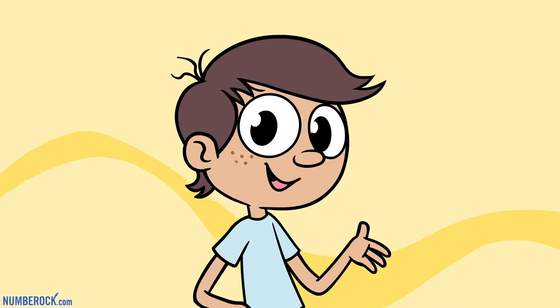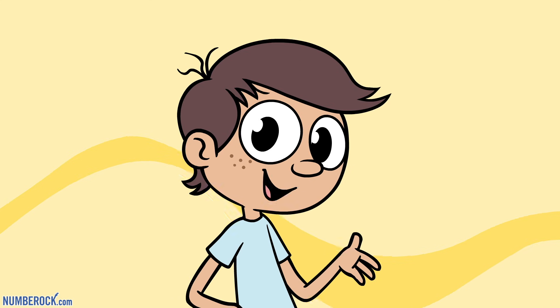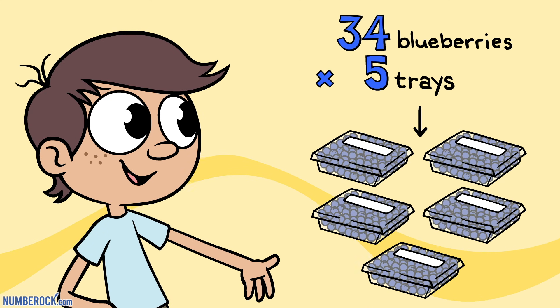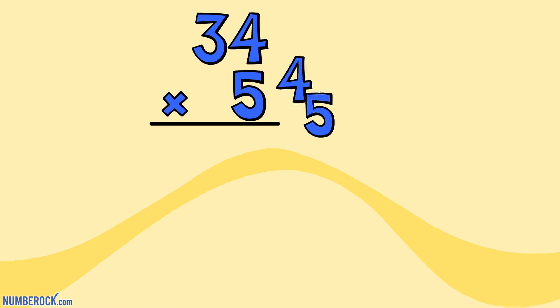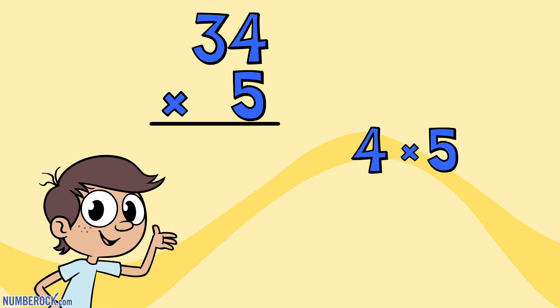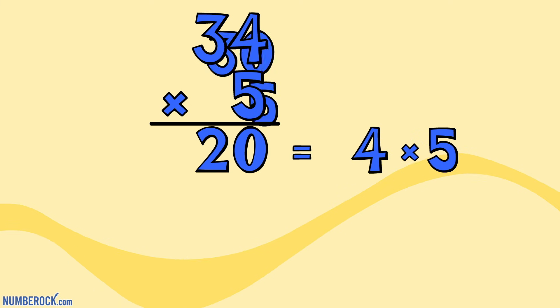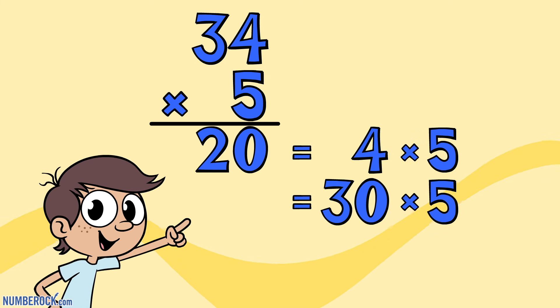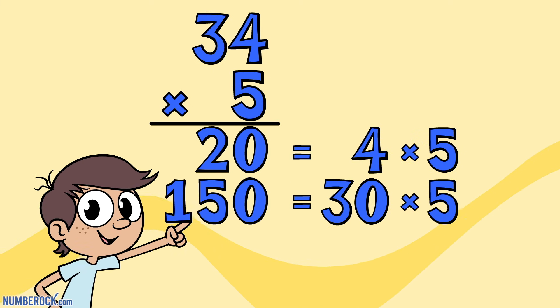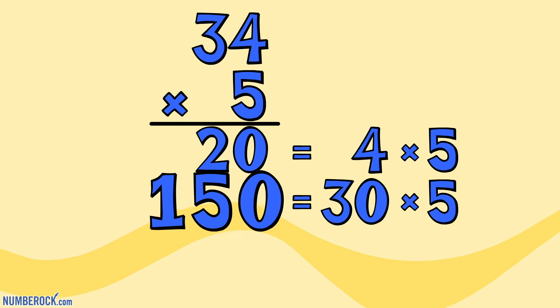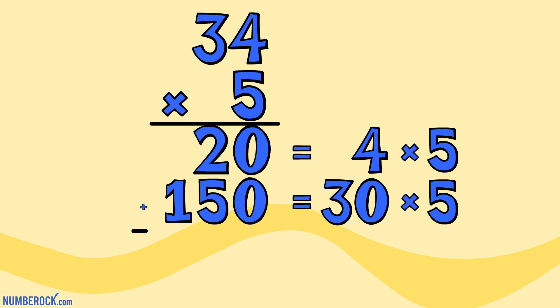So now follow along as I describe how to multiply 34 by 5. I can start with 4 times 5 to see that the product will be 20. Then I'll multiply 30 times 5, and at the product 150, I arrive at the partial products 150 and 20.